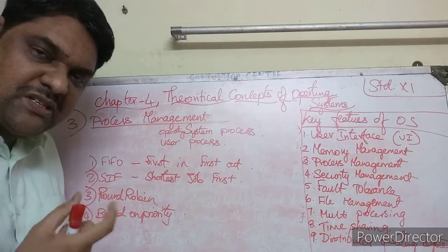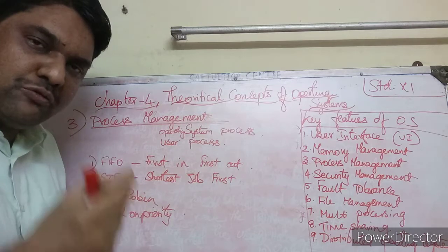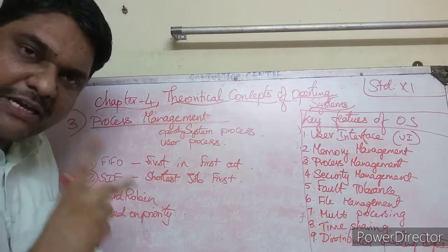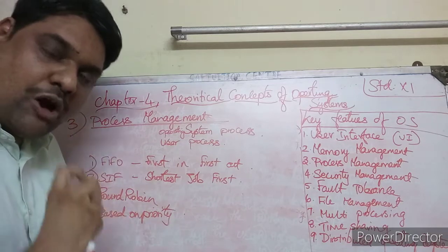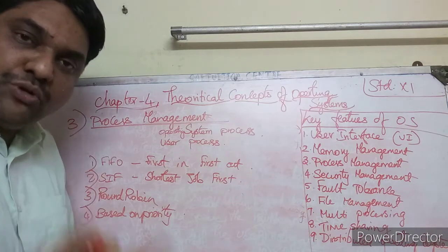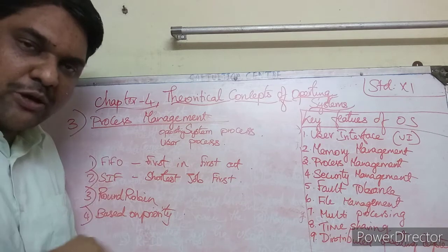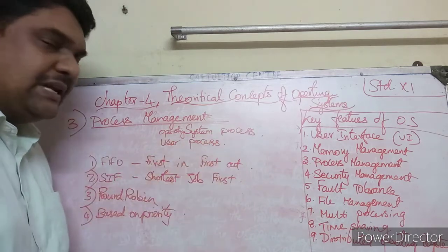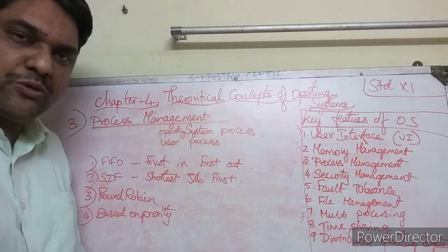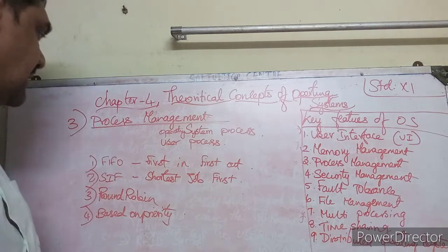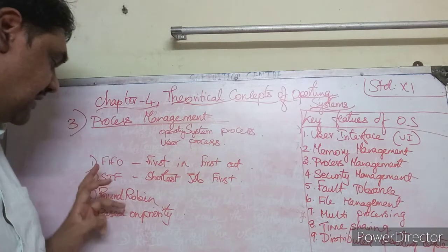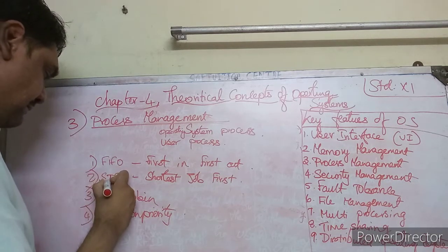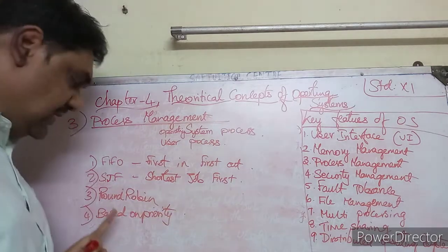In process management, the computer handles each task as a process. The operating system manages processes, and there are different techniques used. The first technique is FIFO — First In First Out. The next is SJF — Shortest Job First.